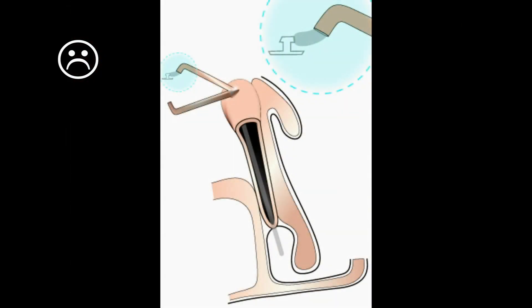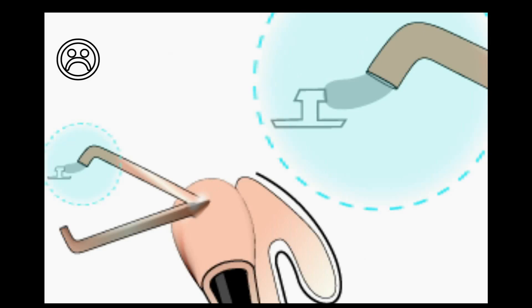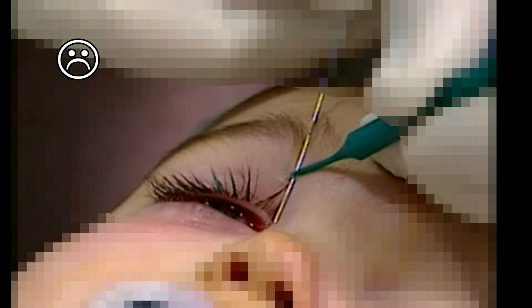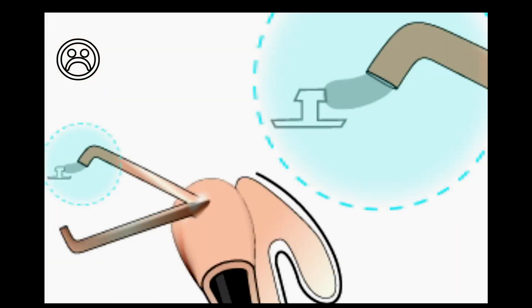If the fixation plug is no longer in contact with the punctum because the stent has come out as the metallic guide is withdrawn, it is necessary to stop and readjust the stent on the guide. The fixation plug is moved up near the guide handle, inserted to the proper position, and then the guide carefully withdrawn.